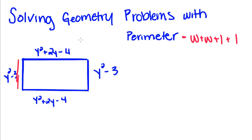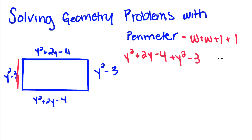We're going to leave it in polynomial format because we don't have any idea what the perimeter equals — we're just going to express it using polynomials. So we're going to take y² + 2y - 4 plus y² - 3 plus y² + 2y - 4 plus y² - 3.